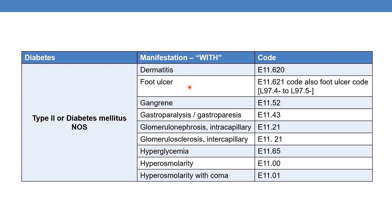For diabetes mellitus with foot ulcer, two codes are required: first E11.621 to indicate diabetes mellitus with foot ulcer, and a second code to indicate the foot ulcer site, which comes under categories L97.4 through L97.5 — these are further expandable. The next is diabetes mellitus with gangrene; the code is E11.52.